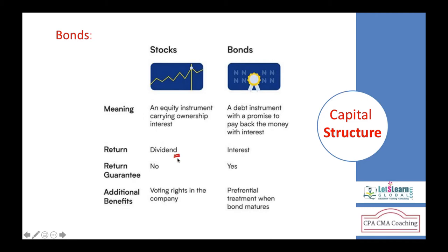Investors in stocks get dividends from the profits of the company. But bond holders are not concerned with profit — we pay interest irrespective of profit. There is no guarantee of return when you invest in stocks. However, for bond holders, there is a guarantee: for example, we will pay you 6% interest regardless of the company's profit. You get $6 for every $100 of investment.